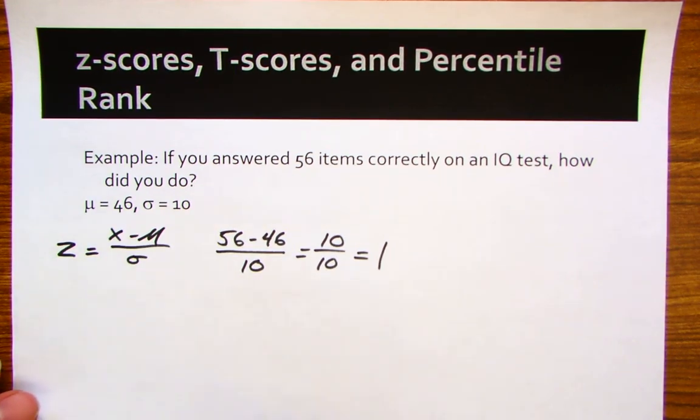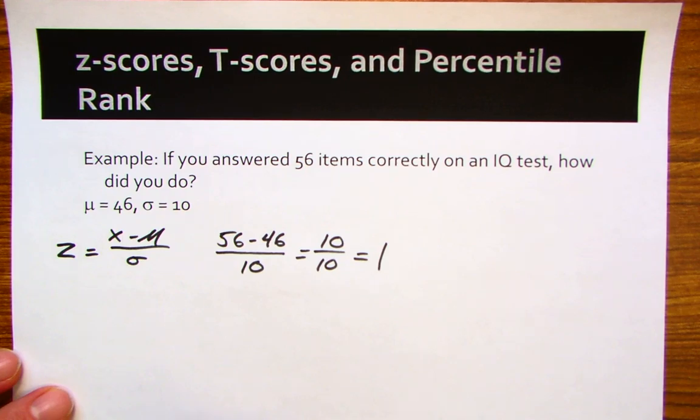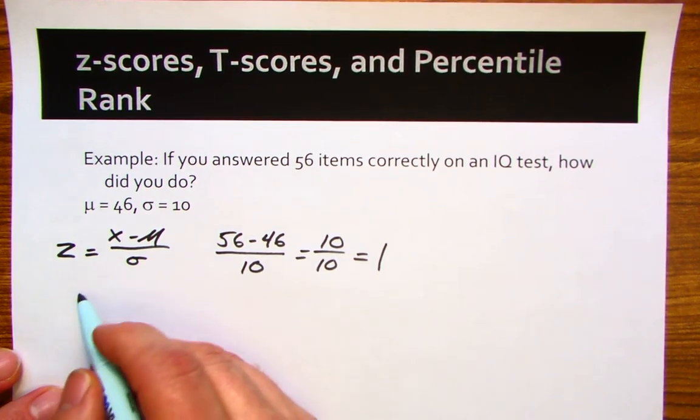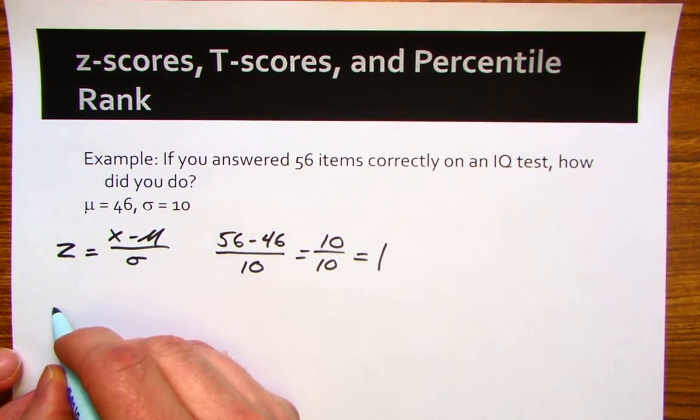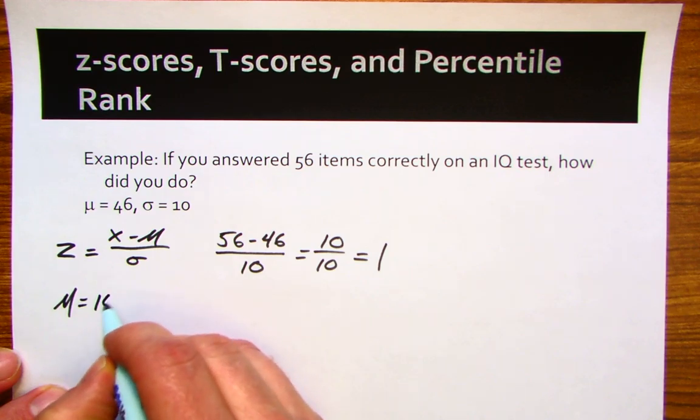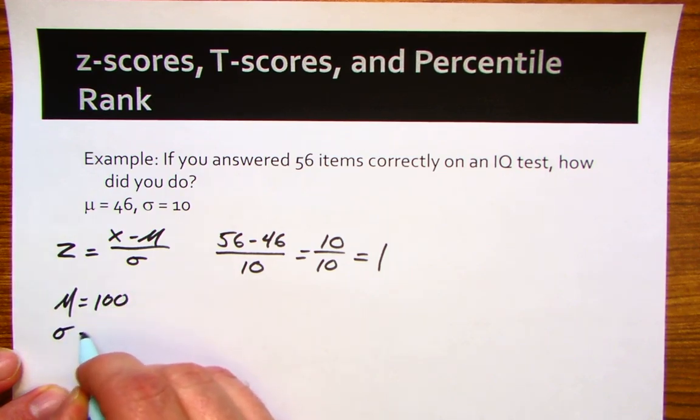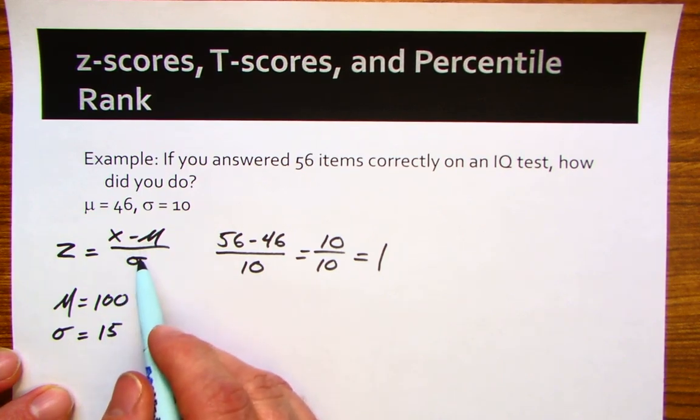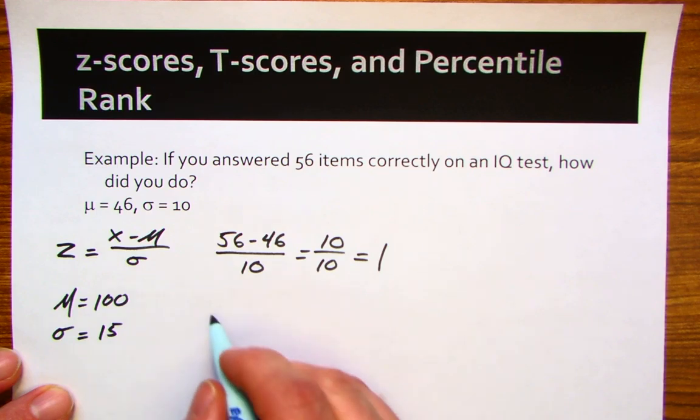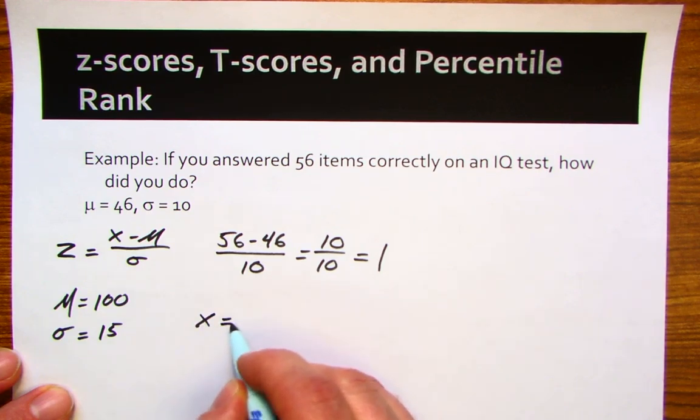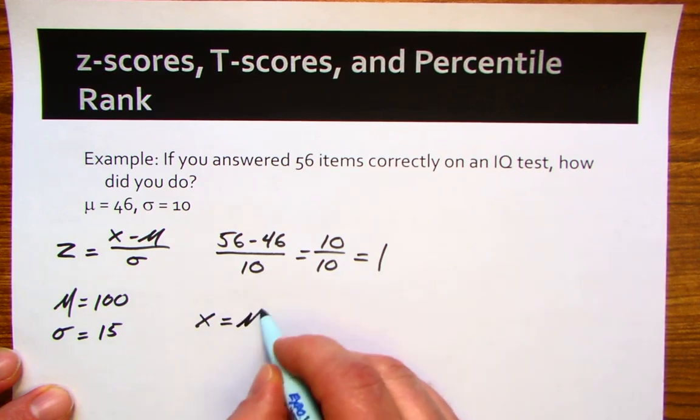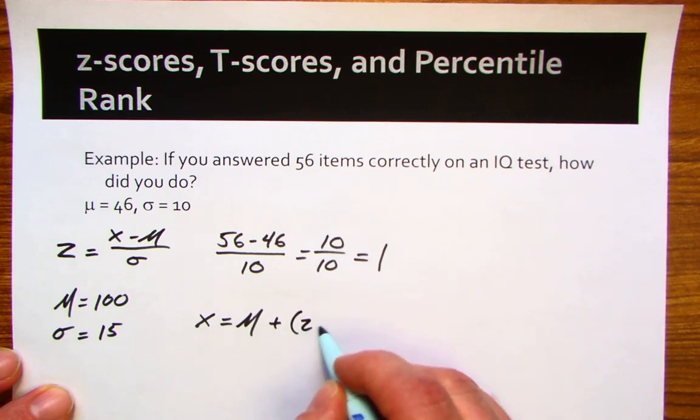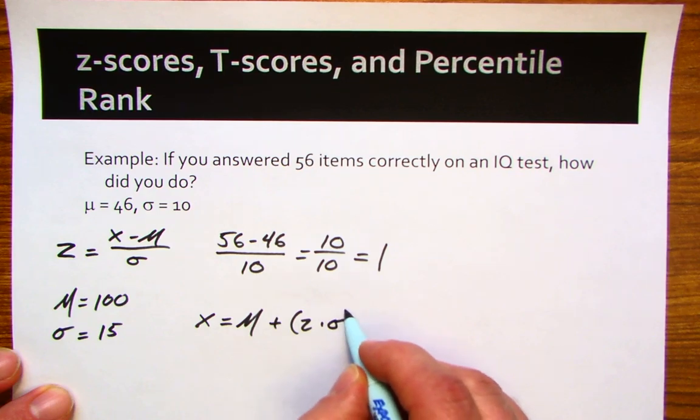So what we do is transform the score again. For IQ tests, they're transformed with a mean of 100 and a standard deviation of 15. If we take this formula and turn it around to give us a score for x, we'd have the mean plus z times the standard deviation.